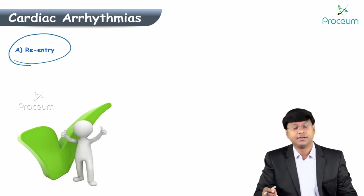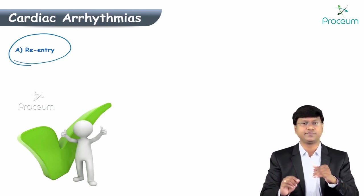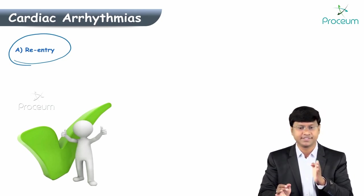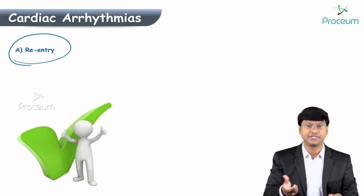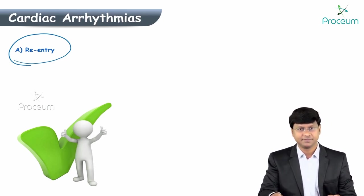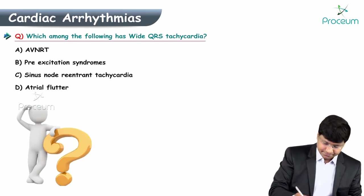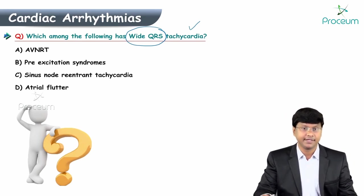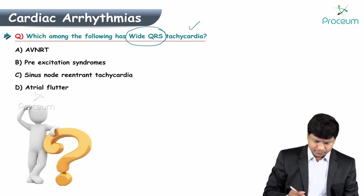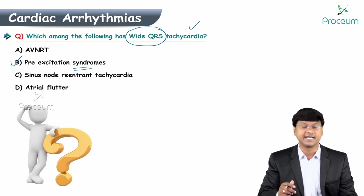The three mechanisms for arrhythmia development are: increased automaticity, triggered activity, and re-entry — the most common being re-entry. Another classification of arrhythmias is based on the duration of the QRS complex. Among the following, which has wide QRS tachycardia: AV nodal re-entrant tachycardia, pre-excitation syndrome, sinus node re-entrant tachycardia, or atrial flutter? The answer is pre-excitation syndrome.